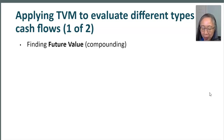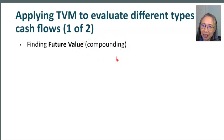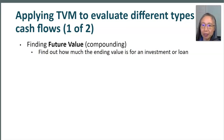When we apply time value of money, we can find the future value. The term that finance people often use is compounding. So when we are compounding, we're finding the future value. Future value basically means how much an investment or loan will be worth — the value of the investment or the loan at the end of the horizon.